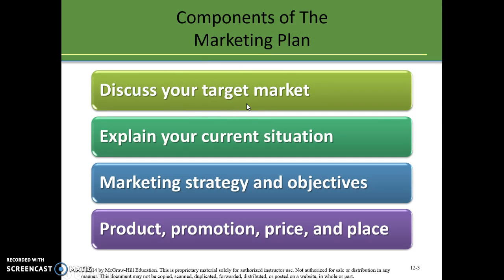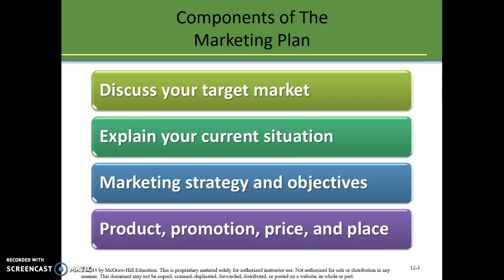You've discussed your target market — this is the general makeup of your marketing plan. Explain your current situation: how much of the industry you've already captured, what's your market share, how is your product being received, how is it comparing to others. It should be a very direct and frank discussion. There's no reason to lie to yourself about how your product is going. Then talk about your marketing strategy and objectives, including your advertising plans. Finally, cover your product, promotion, price, and place — the four Ps.